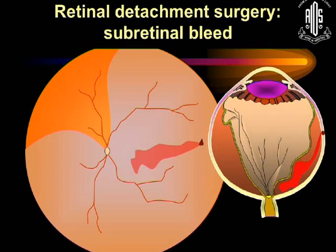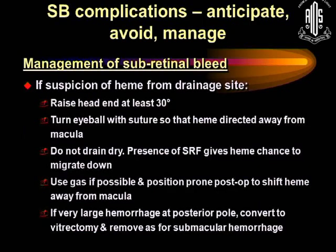If you get an unpredictable subretinal bleed, raise the head end of the patient and turn the eyeball with the suture so that the blood is directed away from the macula. Preferably don't drain dry — the presence of SRF gives the blood a chance to migrate away from the macula. Use gas if possible and position prone post-op to shift the hemorrhage away from the macula. If there is a very large hemorrhage, you may have to convert to vitrectomy and remove it as you would for a submacular hemorrhage.